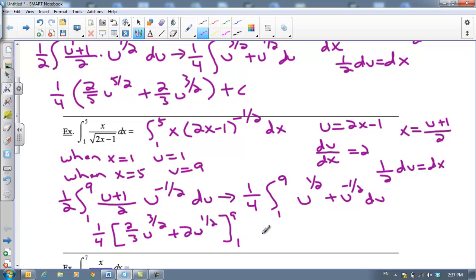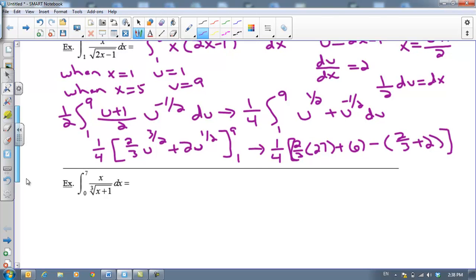So our last step is to plug our 9 in and then our 1 and subtract. So I've got 1/4 times, if we plug in a 9 for u, the square root of 9 is 3 and 3 cubed is 27, remember this is power over root, so that's 2/3 times 27. And then plug in 9 for this u, the square root of 9 is 3, 3 times that 2 is 6. And then we still have to do all of that, now we have to minus, now we're going to plug in our 1. The square root of 1 is 1, 1 cubed is 1, so that's just 2/3 plus 2. And I'm going to stop right there, not going to simplify that.